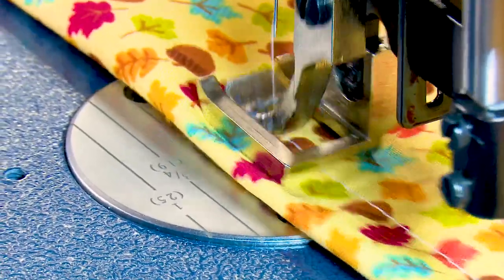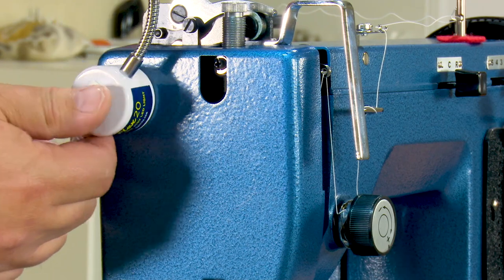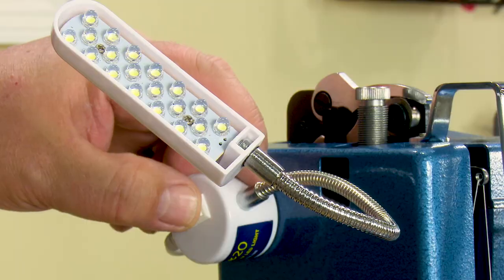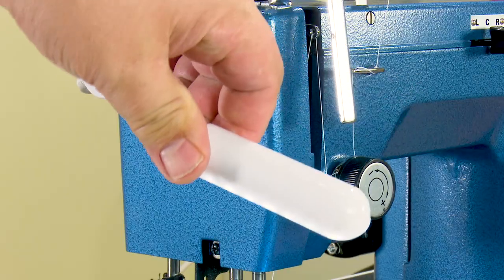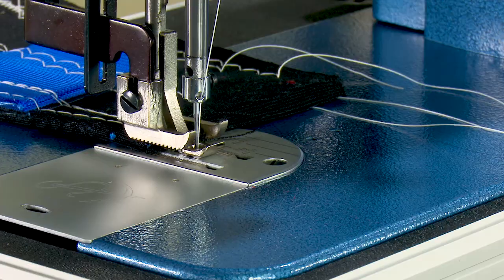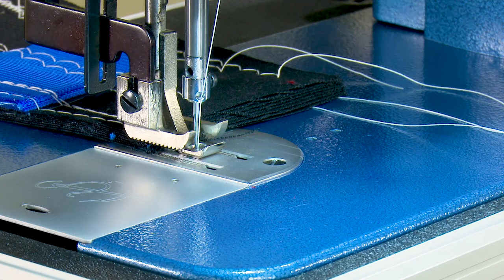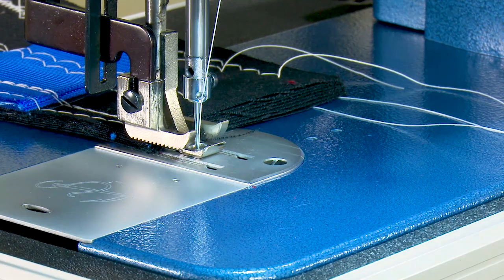Another great accessory included with the Plus Package is the Flex 20 LED light. Stick this light to any surface with either the magnetic base or the included adhesive pad. Having a well lit work surface can make a big difference in the finished results of your next sewing project.